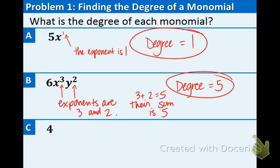Last one, we just had the regular number 4. Technically, there's like a 4x to the zero next to it. Remember, I just talked about this. Anything to the zero power equals 1. So, the degree of a non-zero constant is always zero. Degree equals zero.